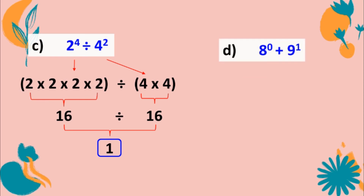Letter D: 8 to the zero power plus 9 to the first power. No expanded form is needed here. Simplifying directly: 8 to the zero power is 1, and 9 to the first power is 9. Then 1 plus 9 equals 10.